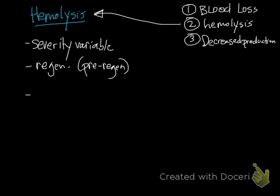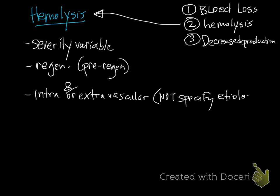We'll talk about intravascular or extravascular causes. These can actually co-occur, so intravascular and/or extravascular. This does not specify etiology, so you cannot treat knowing if it's intra- or extravascular. You just know that there's hemolysis, so that's not tremendously helpful when you have an animal who's very anemic.